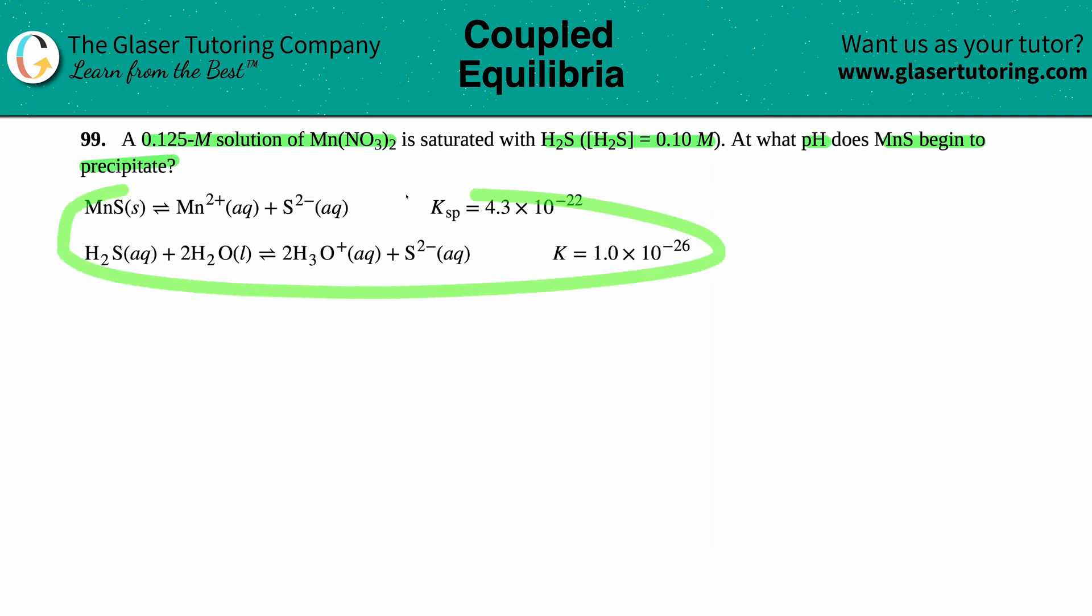And then they give us these two equations. So where do we go from here? They're asking for the pH, right? Generally, a pH always comes from what concentration? Always comes from an H⁺ or a H₃O⁺ concentration.